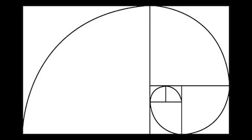Also, a perfect spiral can be created from these numbers. You start with a 1 by 1 square, then another 1 by 1 square, then a 2 by 2 square, then a 3 by 3 square, a 5 by 5 square, an 8 by 8 square, a 21 by 21. When you draw a line through them, it will create a spiral. This is called the golden spiral.